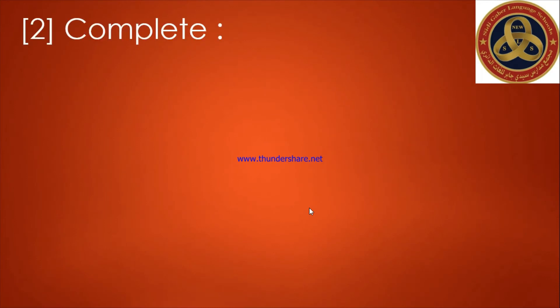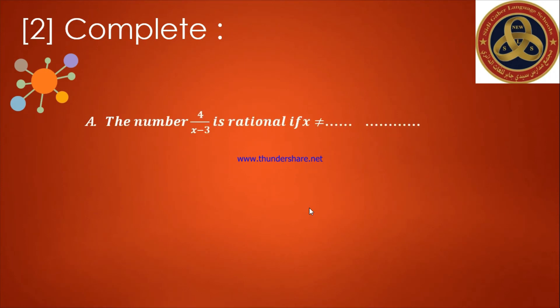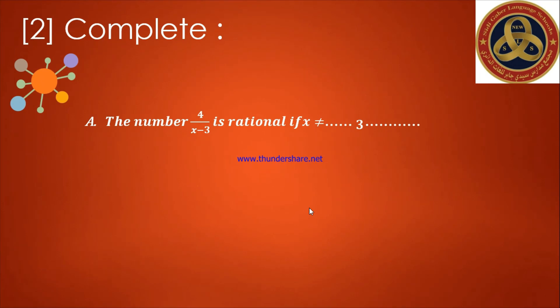Exercise two: complete. Letter A: the number four over (X minus three) is a rational number if X doesn't equal what? I need to find a number that makes the denominator equal to zero. If X equals three, then X minus three equals zero, which makes it not a rational number. So the answer is: X doesn't equal three.